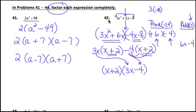If you foil this out, note that you could also write the answer with (3x − 4) in the front and (x + 2) after — it doesn't matter. But if you foil it out, you'd get the problem that you started with.